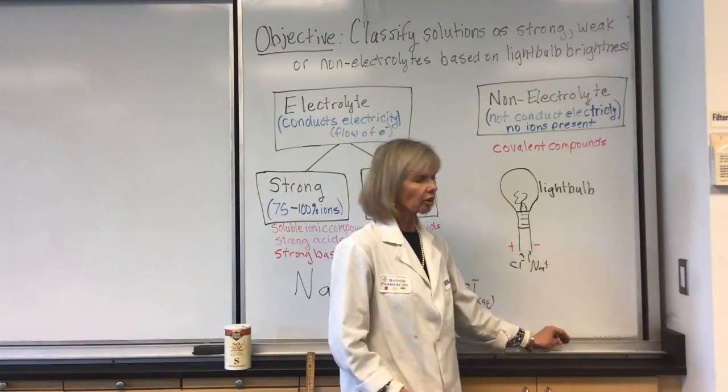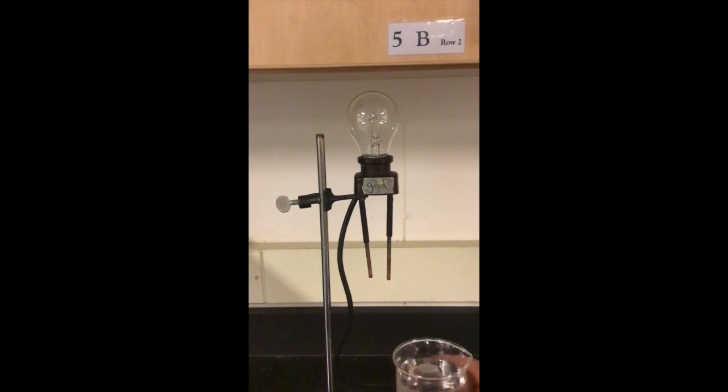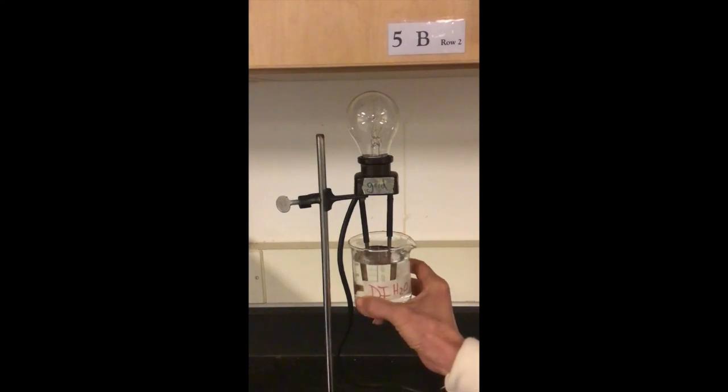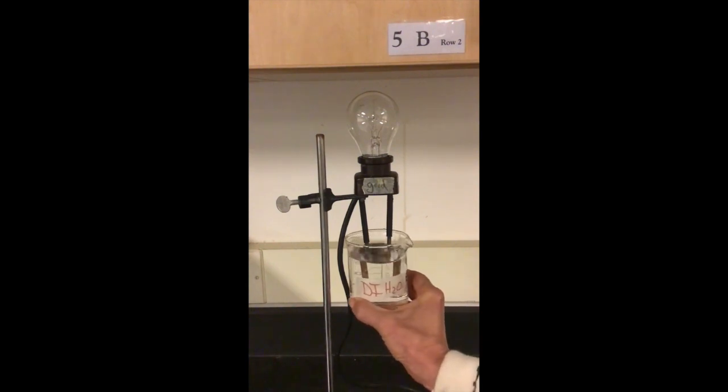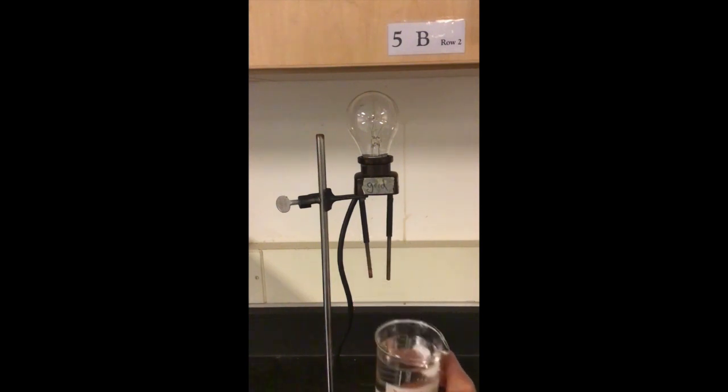Let's go ahead and take a look at our solutions. The first compound we're going to test today is deionized water. We're going to bring the beaker containing the DI water up so the probes are inside our solution, swirl a little bit, and check our light bulb to see if we're conducting any electricity. As the name implies, deionized means the ions were taken out of the water, so we would not expect that to light up the light bulb.